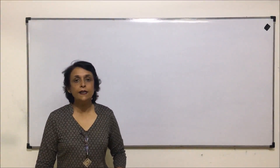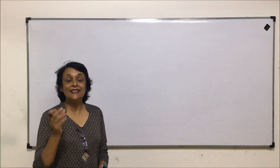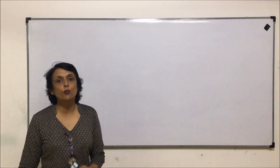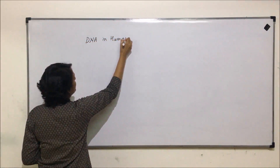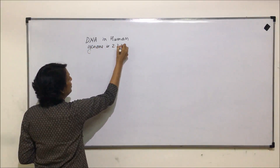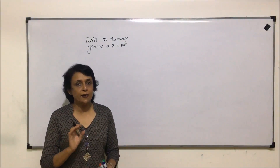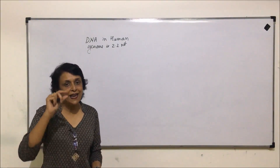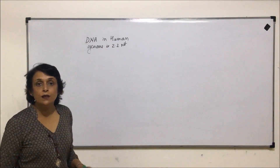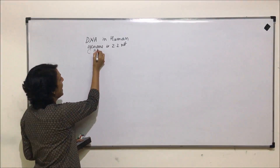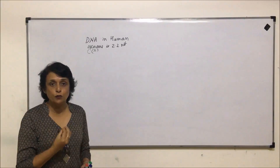In this video we will understand the packaging of DNA. We have already seen that the DNA length in the human genome is about 2.2 meters. This is because in the human genome the base pairs are about 3 billion, and between two consecutive base pairs the gap is about 3.4 angstroms, as given by Watson and Crick. So this calculation gives us the 2.2 meter length of DNA in one haploid genome.